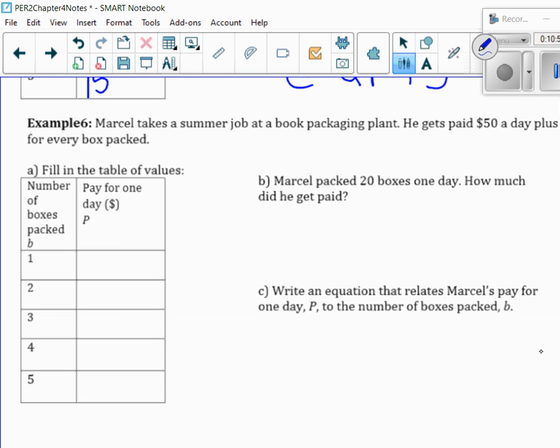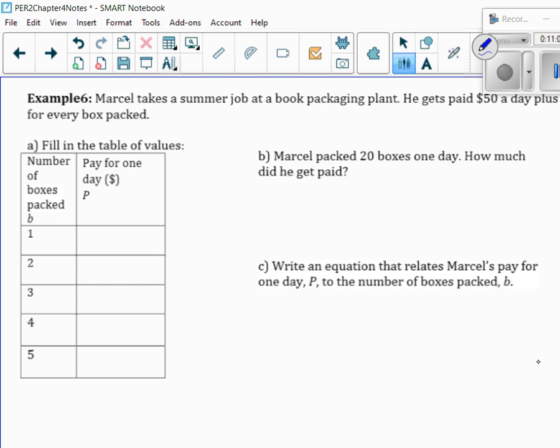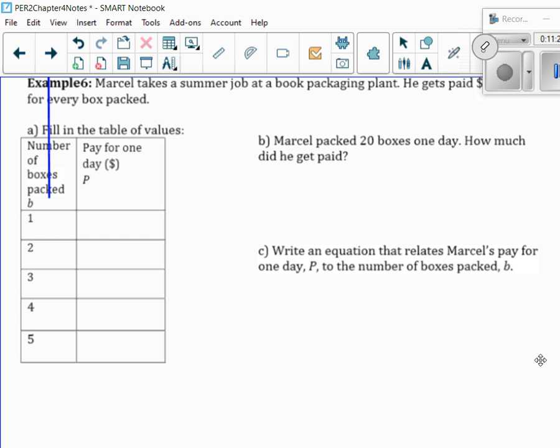All right. Last example, Marcel takes a summer job at a book packaging plant. He gets paid $50 a day plus $2 for every box he packed. Fill in the table of values. So, Marcel could just show up and he gets paid $50. But then, if he doesn't do any more boxes, that's all he gets. So, if you want, you can just say that if he didn't do anything, he would still get paid $50. And then it's a little easier to see what's going on there.